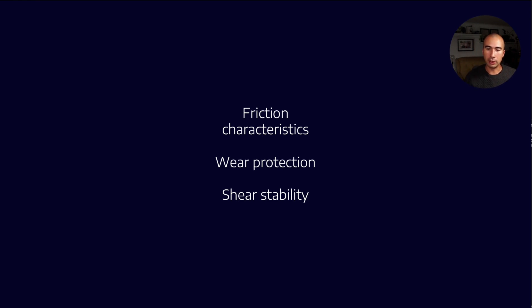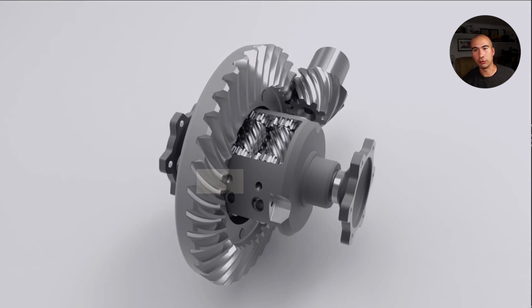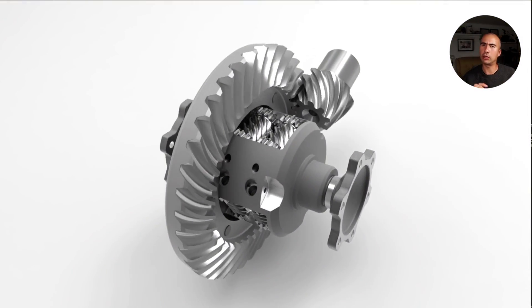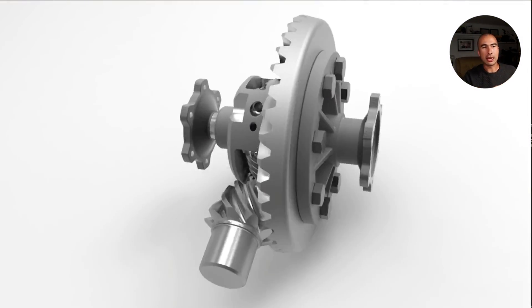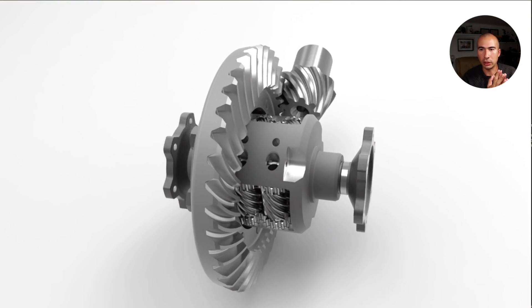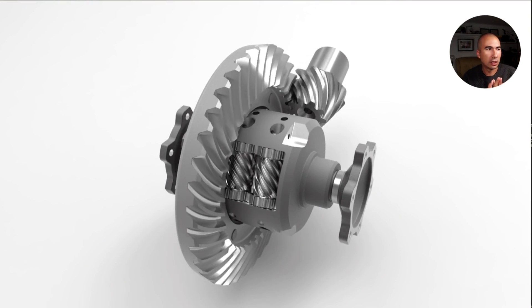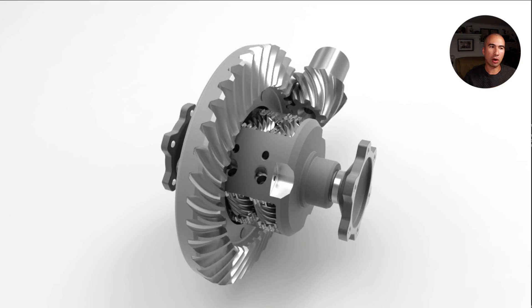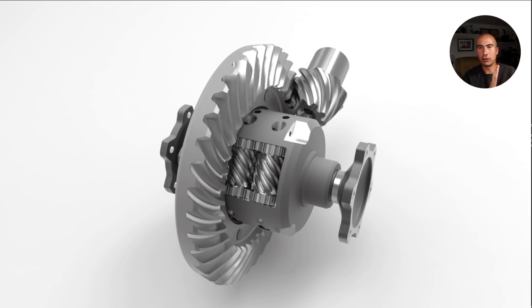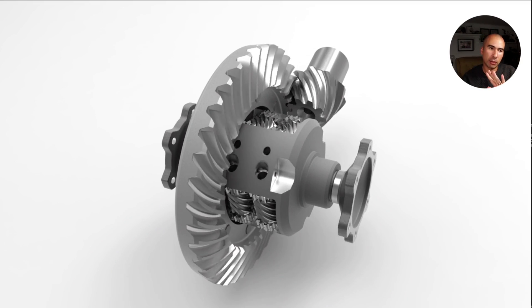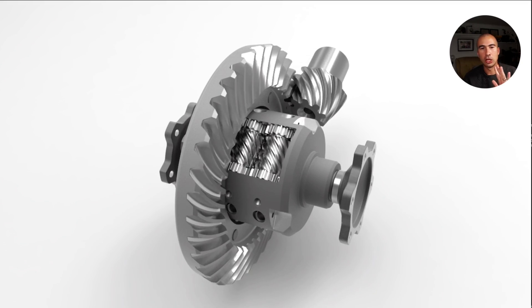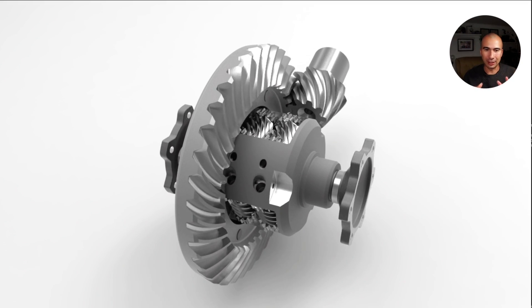The clutch plate mechanism is not the only way to design a limited slip diff. There are, for example, things like the Torsen differential, which operates on a more mechanical principle. In that case I'm not having to worry about friction between clutch plates — I'm having to worry more about metal-to-metal contact and the gear tooth design. So that is a little bit different.